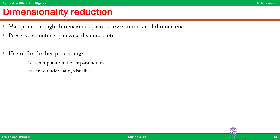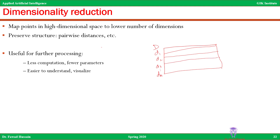Now to understand what the dimensions are, let's look at a matrix. Consider a data matrix D with different samples D1, D2, D3, up to Dm, and features F1, F2, and so on up to Fn. So D is going to be an M by N matrix having M rows and N columns.